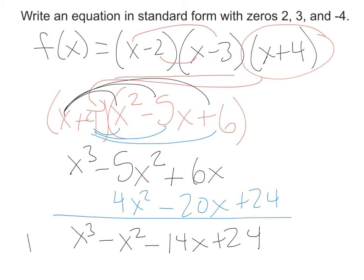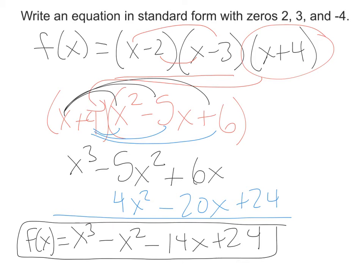That gives us f(x) = x cubed minus x squared minus 14x plus 24 — don't forget the f of x. Now it's in standard form. What's the name of this polynomial? It would be a cubic because of the cube, and there are 4 terms.